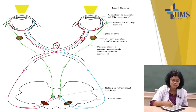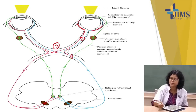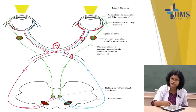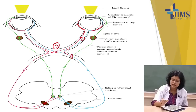From the optic chiasma, fourth is the optic tract. In the optic tract there are the nasal fibers of the opposite side and temporal fibers from the same side. From the optic tract, the impulse will go to the midbrain — superior colliculus and pre-tectal area.